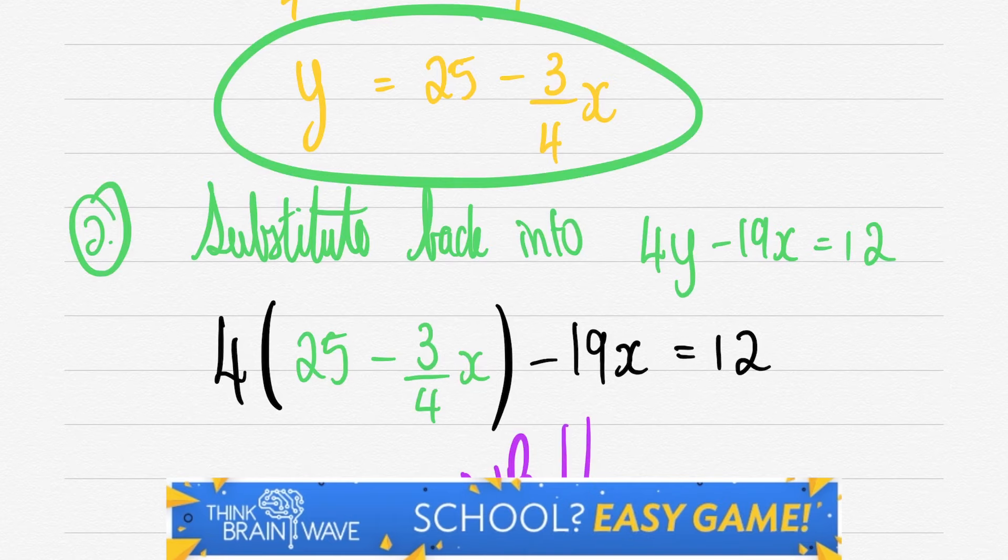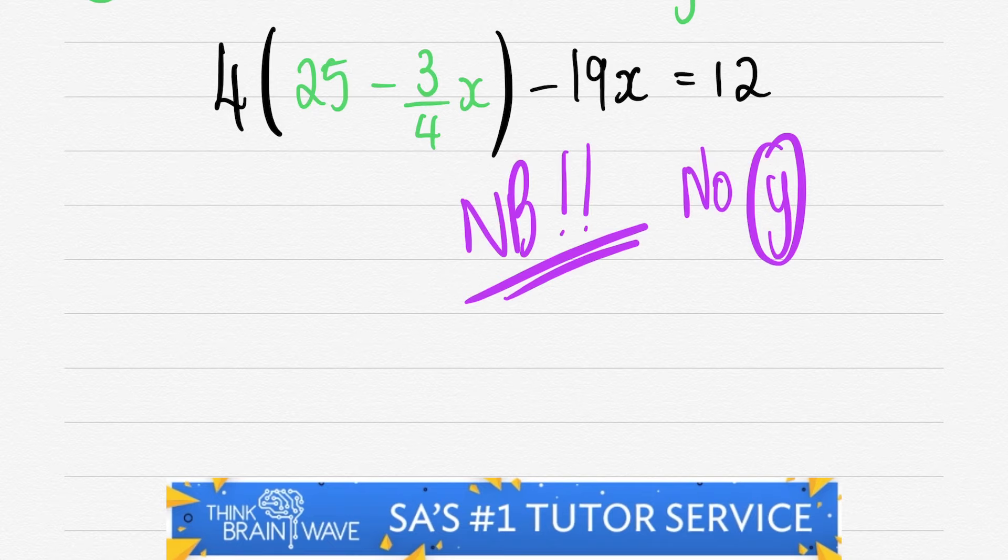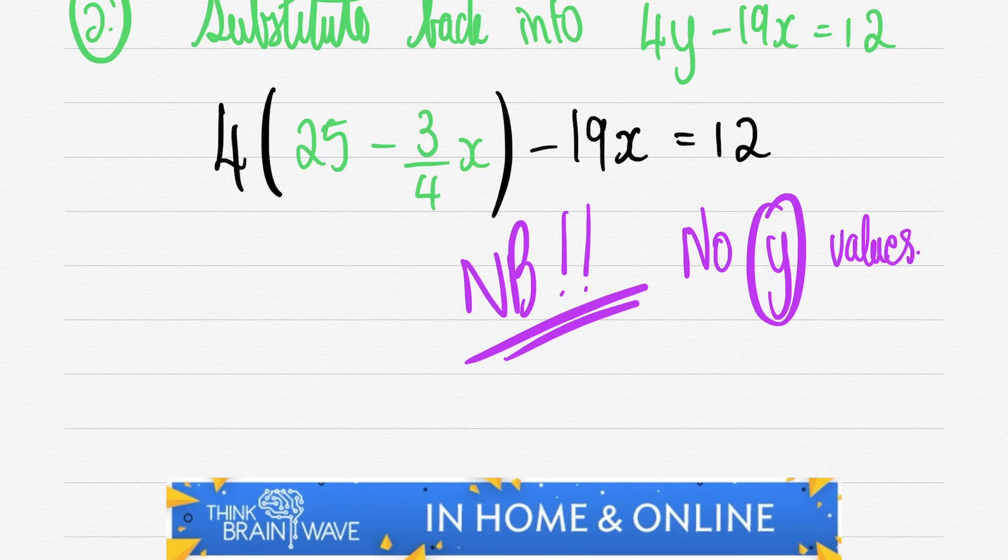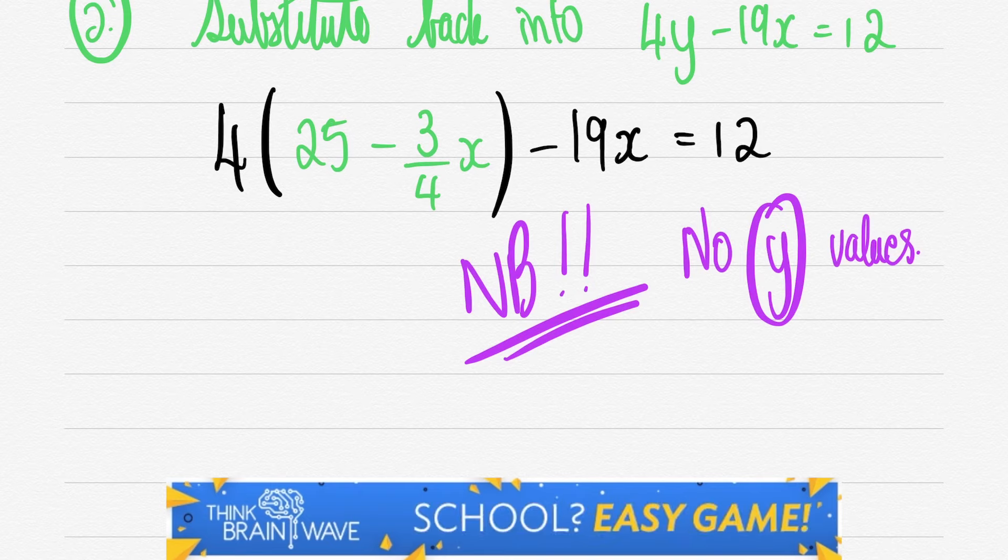Now take note of this. We do not see any y's. Once again, it's very imperatively important that you do not have any of the other variables, in this case y, in your second step. They need to be eliminated and you need to now solve for the main variable which is x.